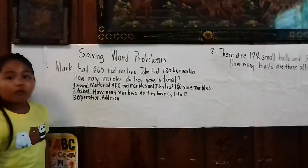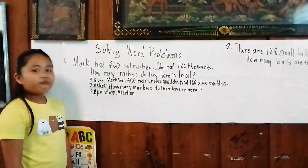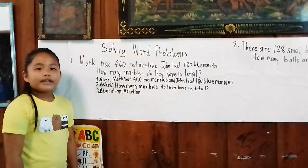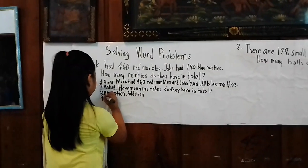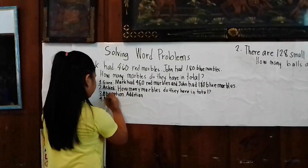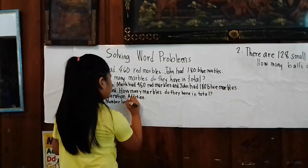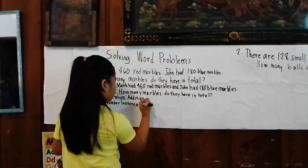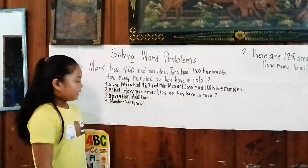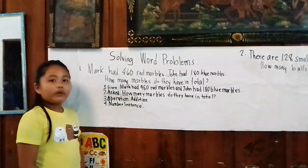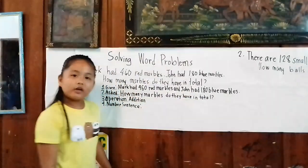The step four is solving the word problem — the number sentence. What will we write in the number sentence? We will write: 160 plus 180 equals N.